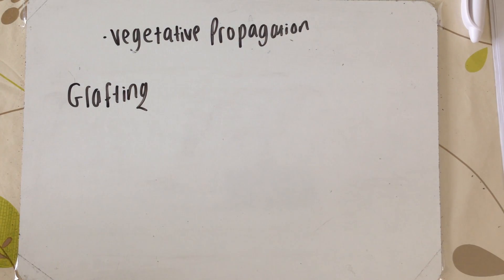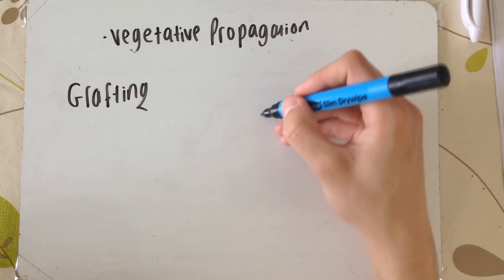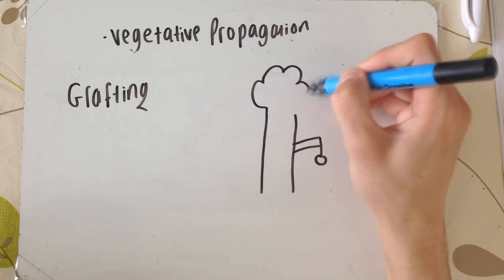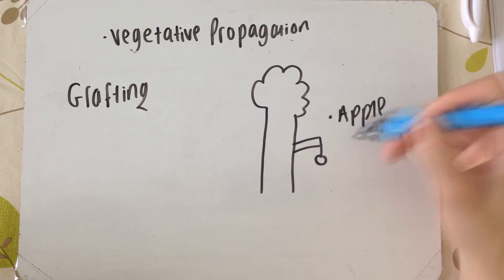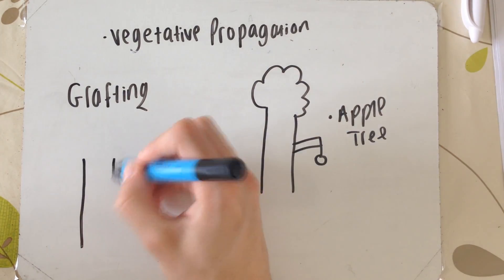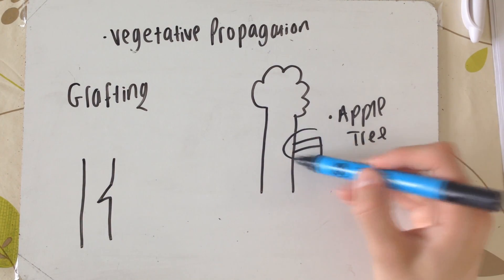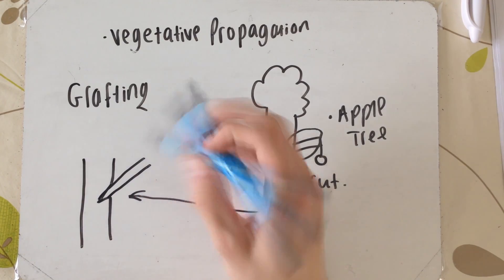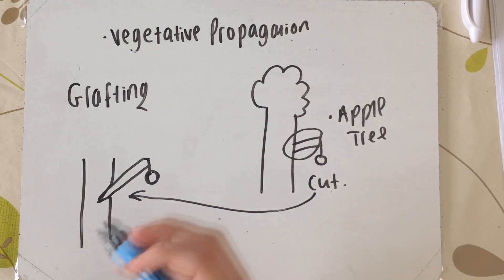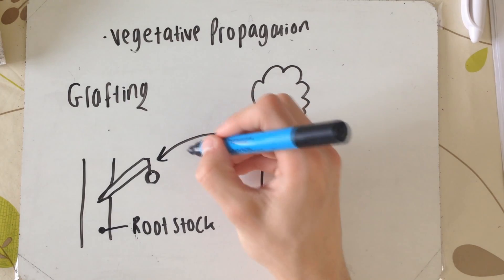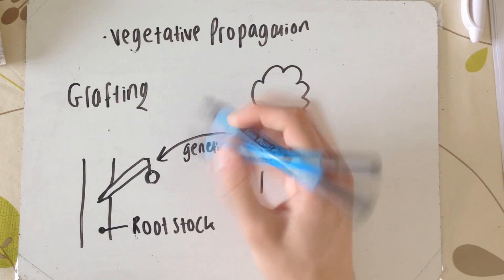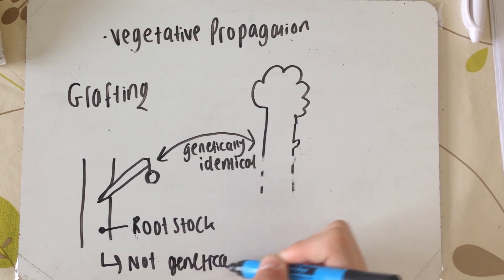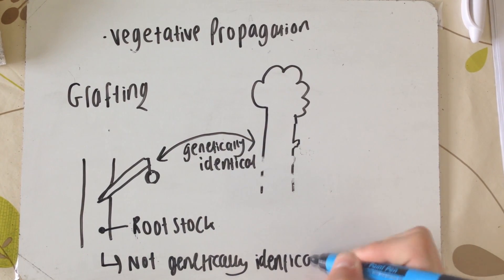The next method is known as grafting. As you can see here, I've got an apple tree producing apples. However, I've got a different tree known as a rootstock, and I want this to produce apples as well, but it can't because it's not an apple tree. So grafting involves cutting a branch and essentially joining it to this other tree — the rootstock. The new branch and the original apple tree are genetically identical, but the rootstock and the apple tree aren't.